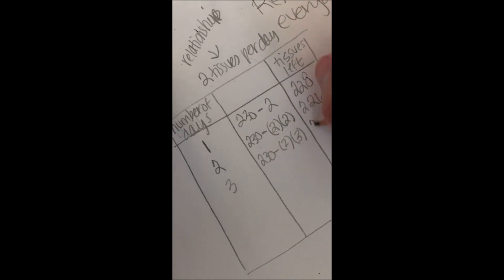What about three days? 230 tissues. Two tissues per day and we have three days. So 230 minus six. Now we have 224 tissues.